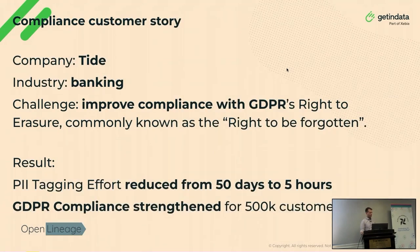For example, Tide — the bank with nearly half a million customers — uses rule-based automation for tagging. They managed to turn a 50-day manual process into hours of work for their tagging efforts.